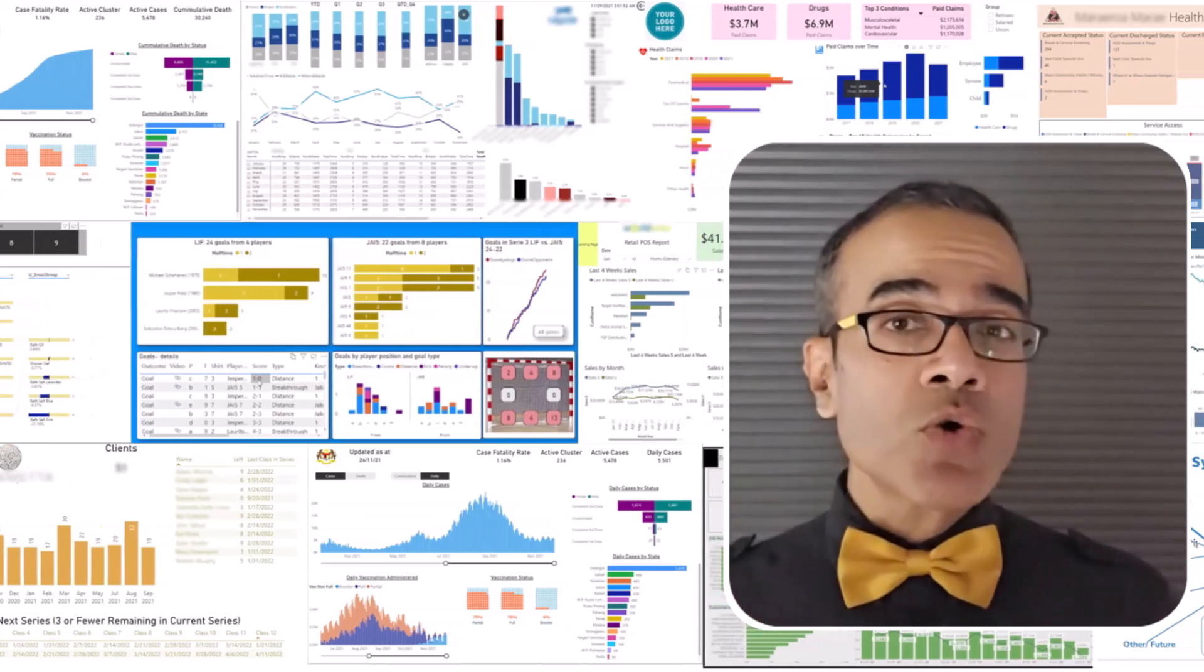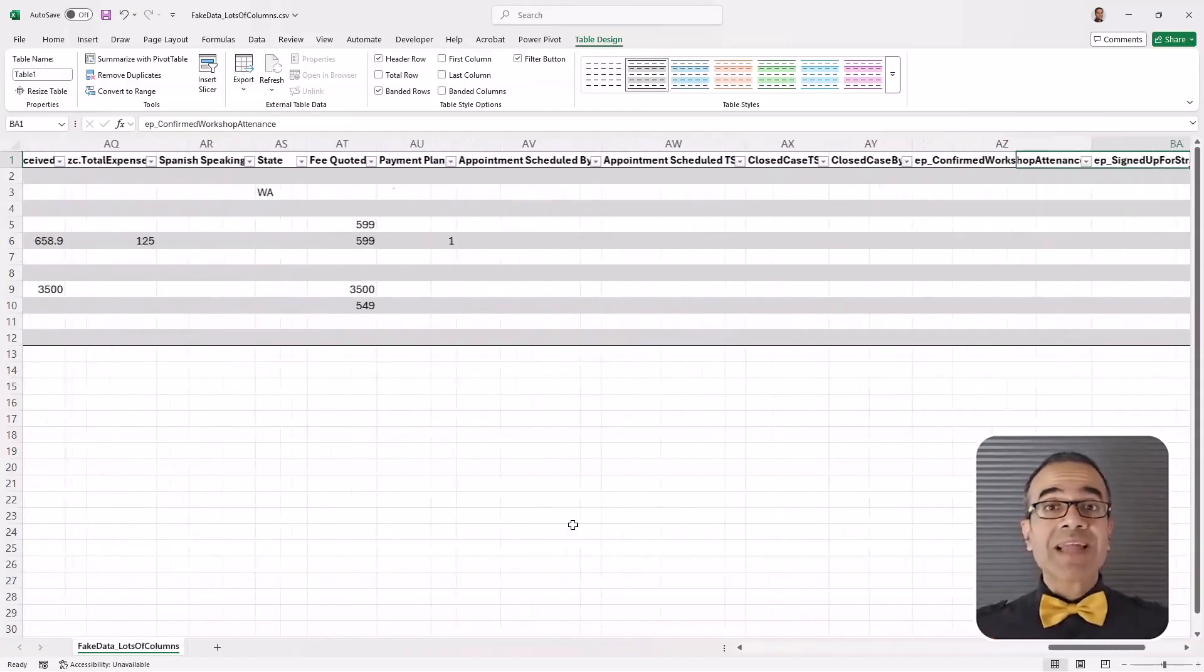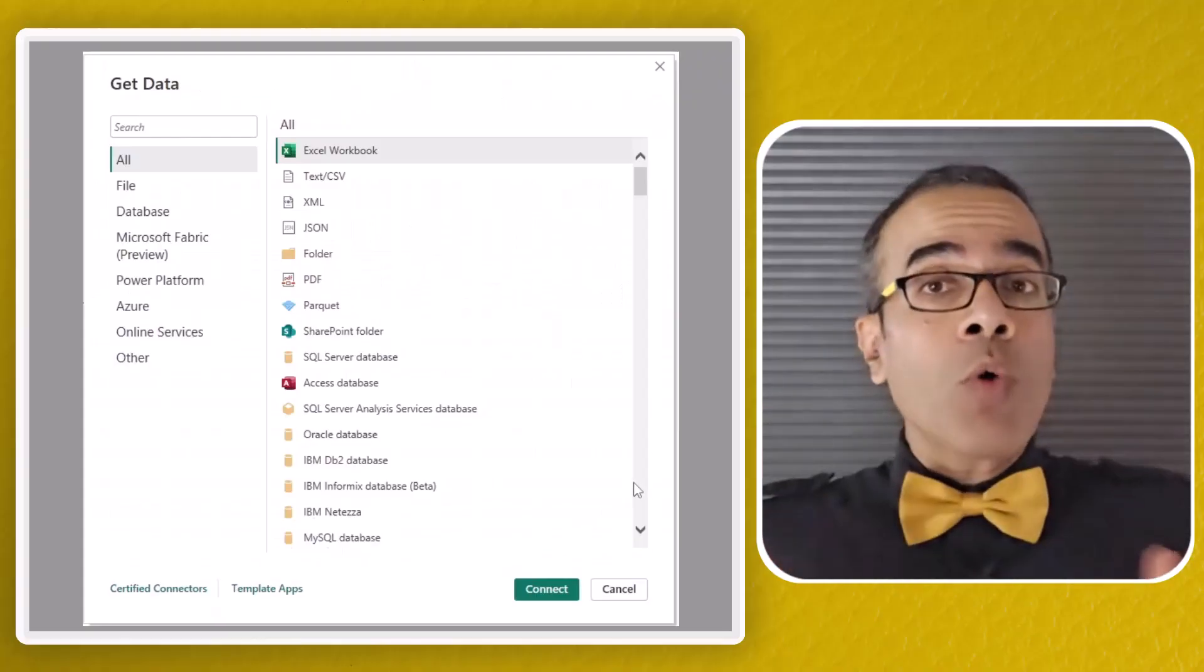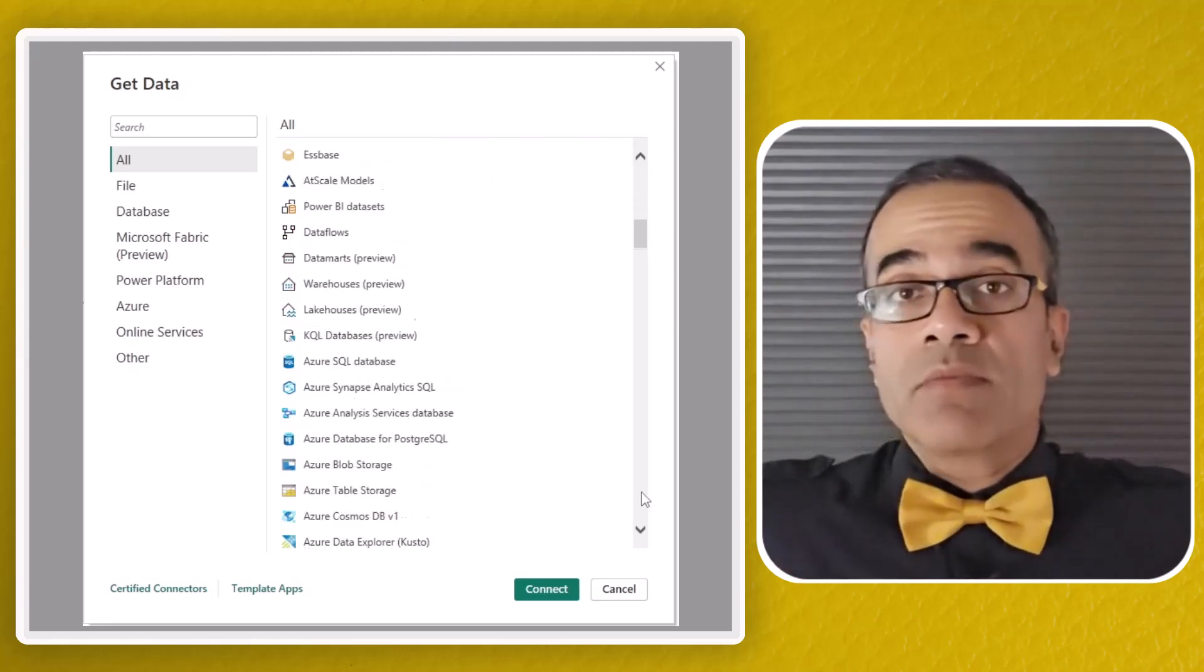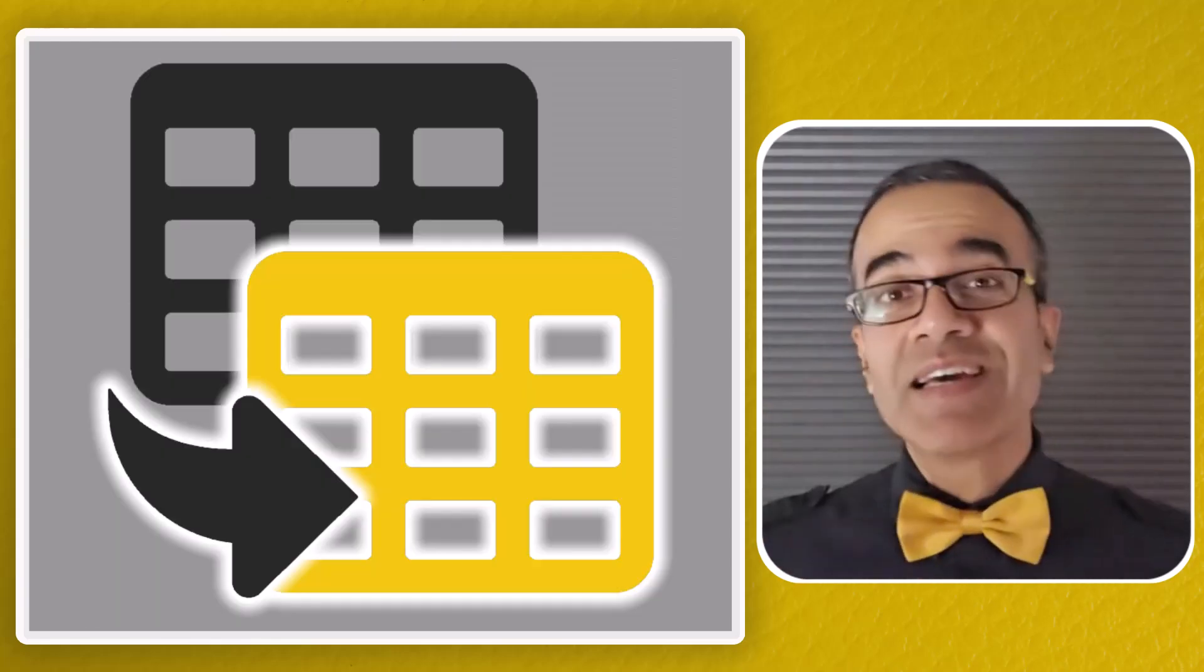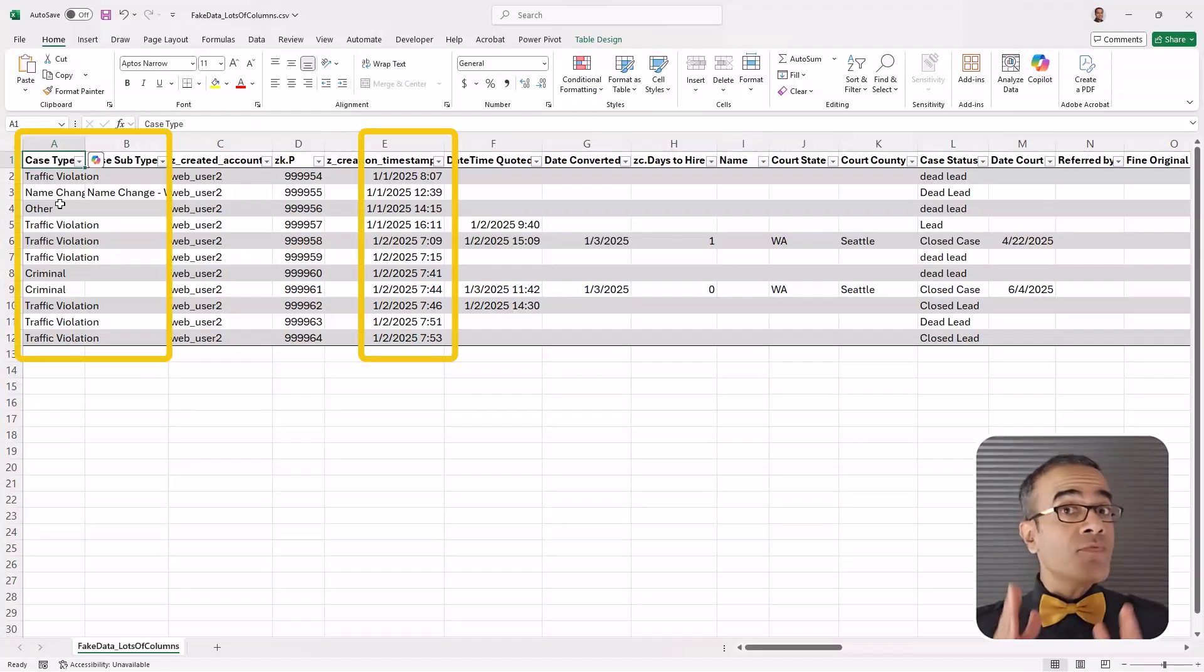So let me show you one of the client files I work with. Look at this, lots of columns, and that's totally fine. You don't always have control over what the source data looks like. And I really don't care, because I have Power Query, the kitchen of Power BI. Now in this case, I'm just extracting a few of these columns.